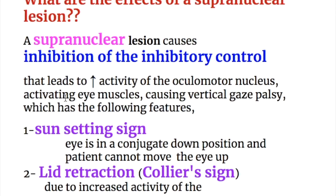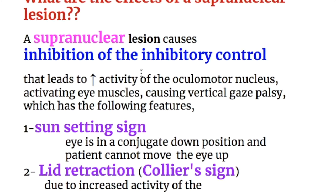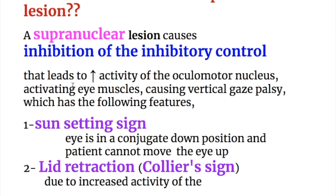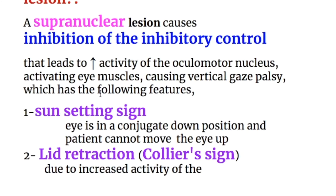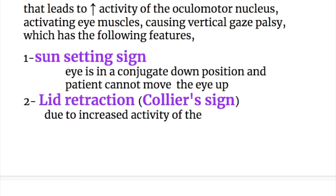What are the effects of a supranuclear lesion? A supranuclear lesion causes inhibition of inhibitory control, which leads to increased activity of the oculomotor nucleus that activates the eye muscles, causing vertical gaze palsy. This is just like the loss of inhibitory control in an upper motor neuron lesion which causes spastic paresis — here too there is loss of inhibitory control.